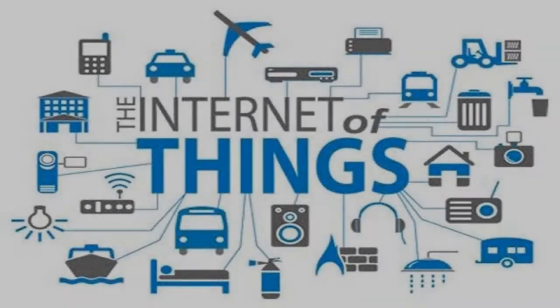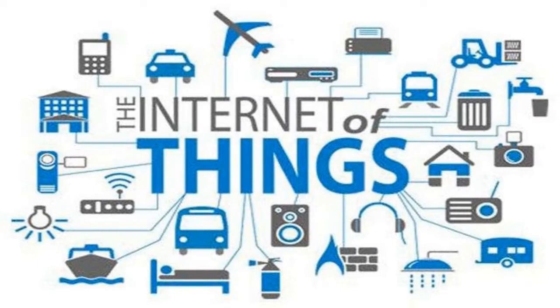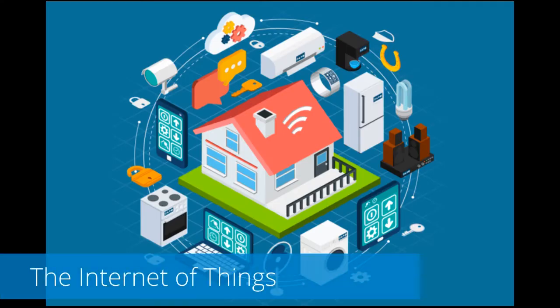The next generation of internet communication has become known as the internet of things, where everything around us will have an internet connection. This includes everything from our cell phones, coffee makers, washing machines, headphones, lamps, wearable devices, and almost anything you can think of.